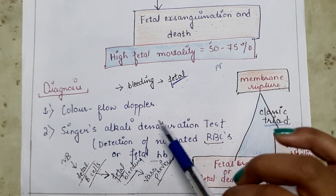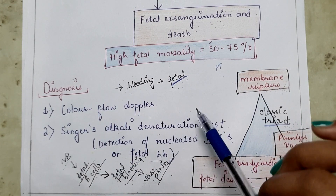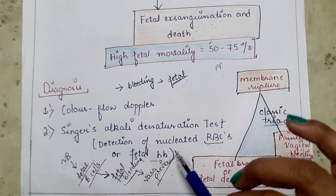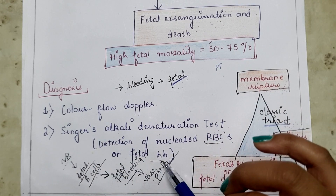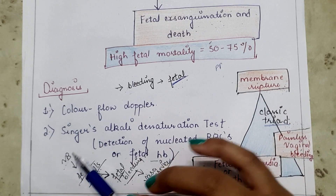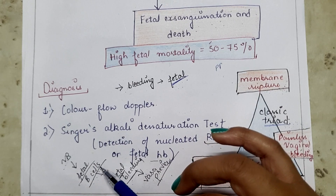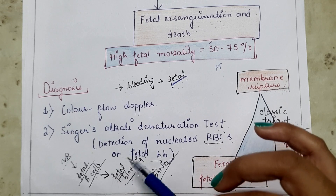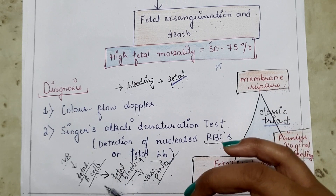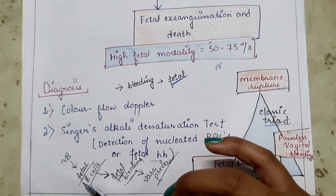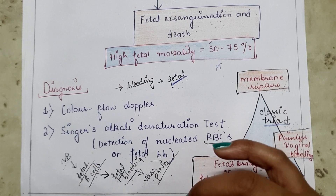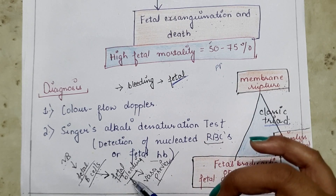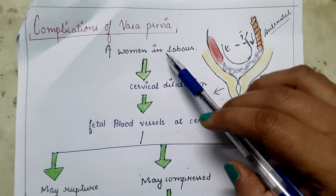Under diagnosis, the first investigation is color flow Doppler ultrasonography, which is done to diagnose the condition. The second is the Singer's alkali denaturation test (Apt test), performed to detect nucleated RBCs or fetal hemoglobin. If there is vaginal bleeding, this test checks whether fetal blood cells are present. If fetal blood cells are present, the blood loss is fetal and the cause is Vasa Previa. If fetal blood cells are absent, the blood loss is maternal, indicating placenta previa or abruptio placentae.